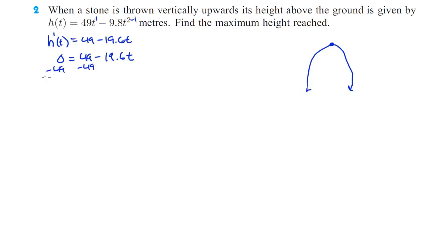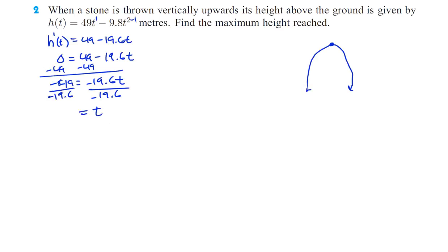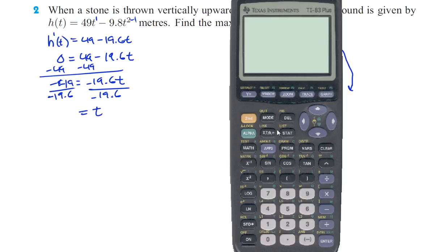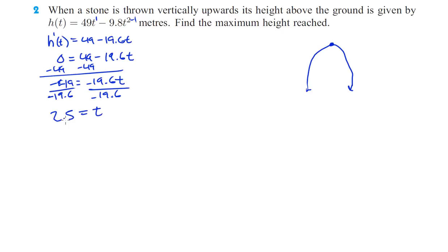Subtract 49 from both sides, we get negative 49 equals negative 19.6T. Divide both sides by negative 19.6, and we get T equals — let's do 49 divided by 19.6 — and that gives us 2.5. That tells us how long it takes to get to the max height. To find the actual maximum height, since we know it takes 2.5 seconds to reach the top, we have to plug 2.5 into the original equation. Whenever you want to find your Y value, you always plug it into the original equation.